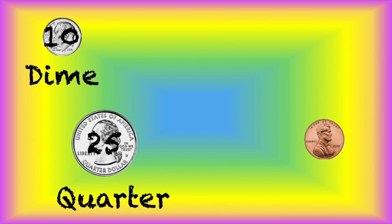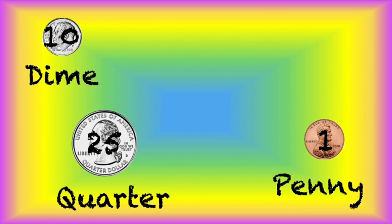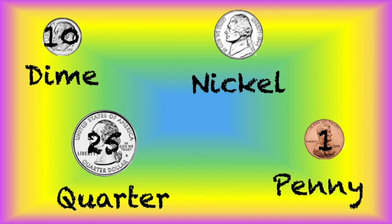Can you tell me what this coin is? It's a dime. How much is a dime worth? 10 cents. What is this coin? It's a quarter. How much is a quarter worth? 25 cents. What is this coin? It's a penny. How much is a penny worth? 1 cent. What is this coin? It's a nickel. How much is a nickel worth? 5 cents.